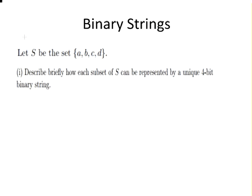Let's consider a subset of S to be {b, d}. Now for this subset, B is present and D is present, but A and C are not present. So how would we represent this information?